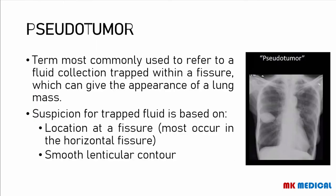Moving on to a pseudotumor — this term refers to fluid collected within a fissure. One of the prominent fissures visible on the posterior-anterior chest X-ray is the horizontal fissure. Sometimes fluid can accumulate in this horizontal fissure such that it appears to look like a mass within the lungs, but it's actually fluid accumulating within the fissure. What leads you to suspect this is the location — found in the horizontal fissure — and it gives a smooth lenticular contour, appearing like a lens.